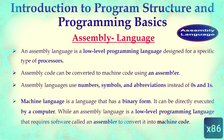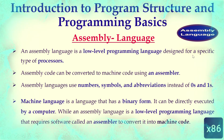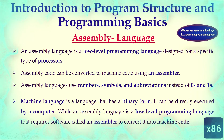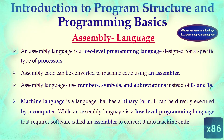An assembly language is a low-level programming language designed for a specific type of processor. Assembly code can be converted into machine code using an assembler. Instead of zeros and ones, assembly language uses numbers, symbols, and abbreviations. In contrast, machine language uses zeros and ones — binary language — which a computer can execute directly. The assembler converts the numbers, symbols, and abbreviations of assembly language into zeros and ones.